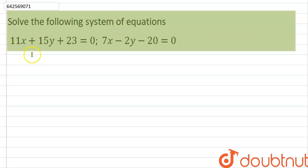The question given is: solve the following system of equations: 11x plus 15y plus 23 equals 0 and 7x minus 2y minus 20 is equal to 0.